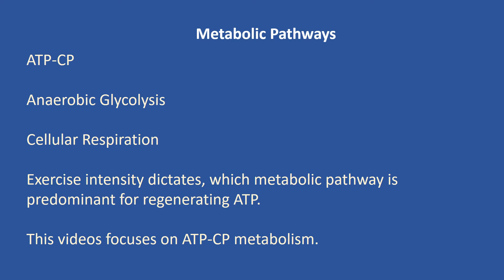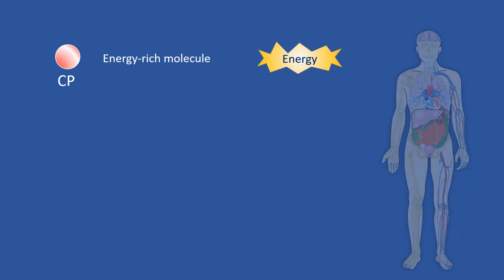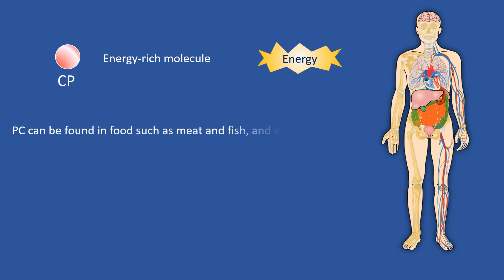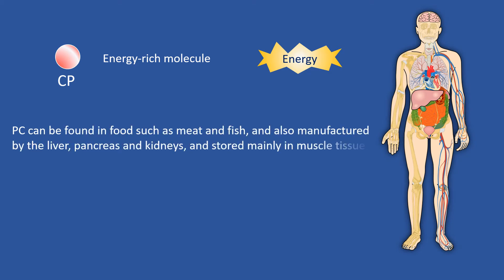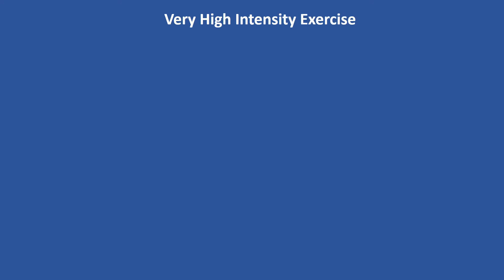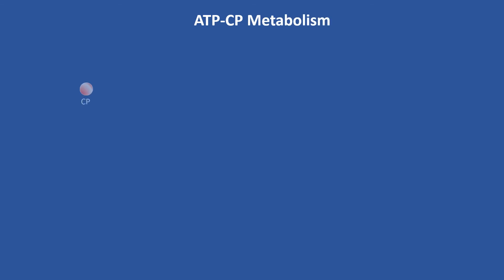Exercise intensity dictates which metabolic pathway is predominant for regenerating ATP. This video focuses on ATP-creatine phosphate metabolism. Creatine phosphate, also known as phosphocreatine, is an energy-rich molecule that occurs naturally in the human body. Phosphocreatine can also be found in food such as meat and fish, and is also manufactured by the liver, pancreas, and kidneys, and stored mainly in muscle tissue. During very high intensity exercise, the ATP-phosphocreatine metabolism becomes predominant in generating the energy required.